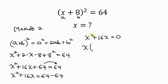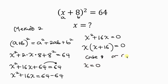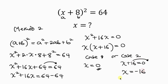We factor out x from the left hand side since x is common: x(x + 16) = 0. Case 1: x = 0. Case 2: x + 16 = 0, so moving 16 to the right gives x = −16. We've got the same two values of x.